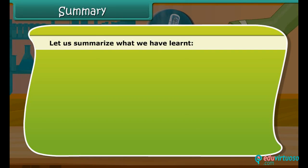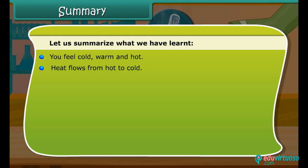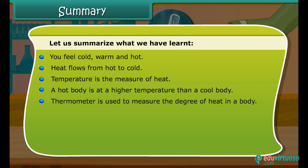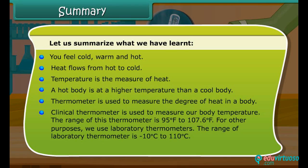Let us summarize what we have learned. You can feel cold, warm and hot. Heat flows from hot to cold. Temperature is the measure of heat. A hot body is at a higher temperature than a cool body. A thermometer is used to measure the degree of heat in a body. A clinical thermometer is used to measure body temperature, with a range of 95°F to 107.6°F. For other purposes, we use laboratory thermometers, with a range of -10°C to 110°C. The normal temperature of the human body is 98.6°F.